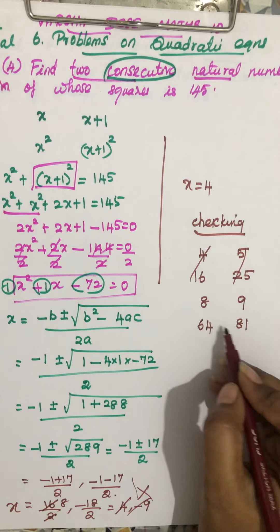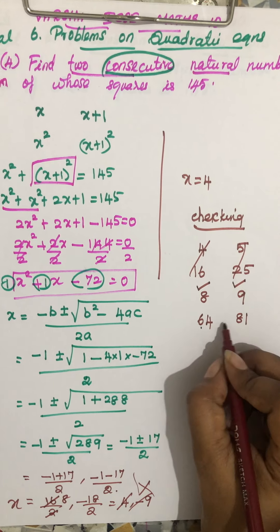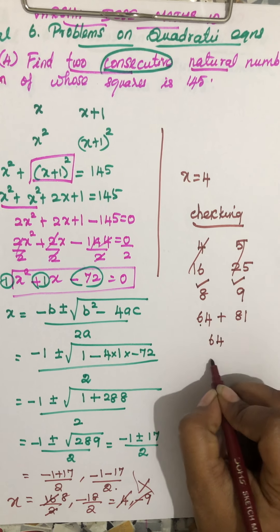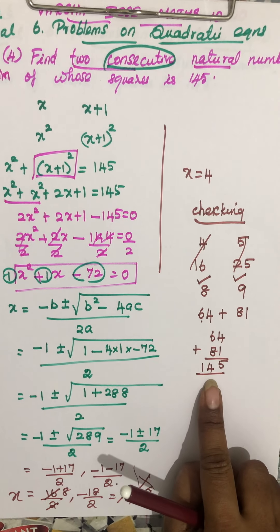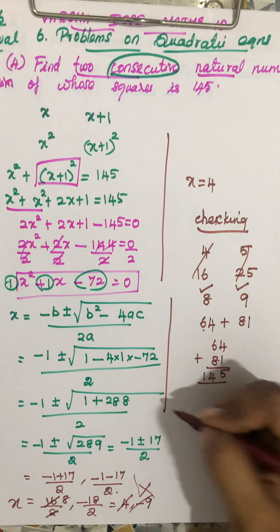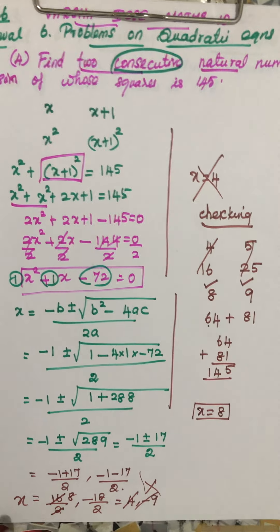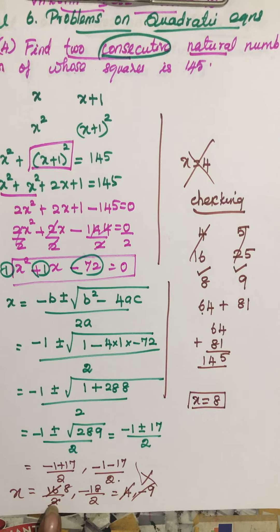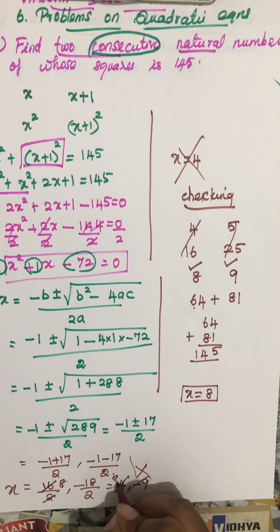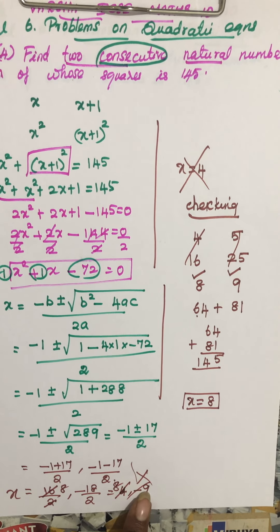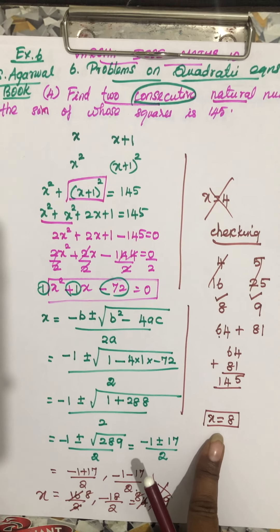Adding 64 and 81 gives 145, which matches the given condition. So our answer is 100 percent correct. x equals 8, and the two consecutive natural numbers are 8 and 9. We do not take minus 9 since the answer must be a natural number.